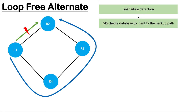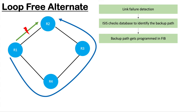Once ISIS identifies the backup path it will try to program that path into the data plane. I'm considering the router has control plane and data plane separation, which is the case with almost every router in the network today. Once the control plane identifies the backup path, it tries to configure that path into the data plane because the data plane is where forwarding happens. But you can see this whole flowchart is going to take some time.